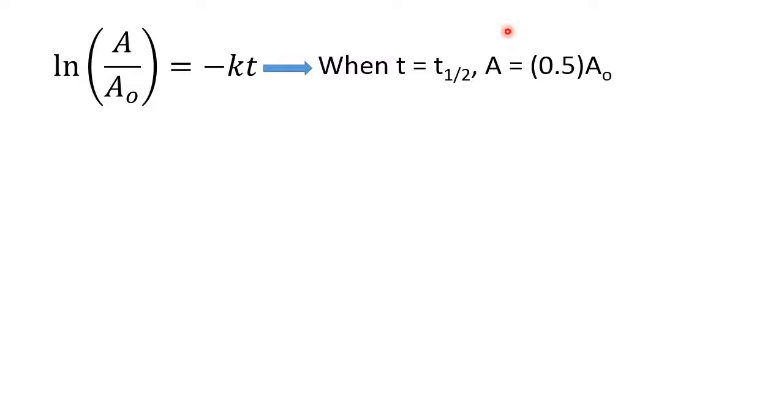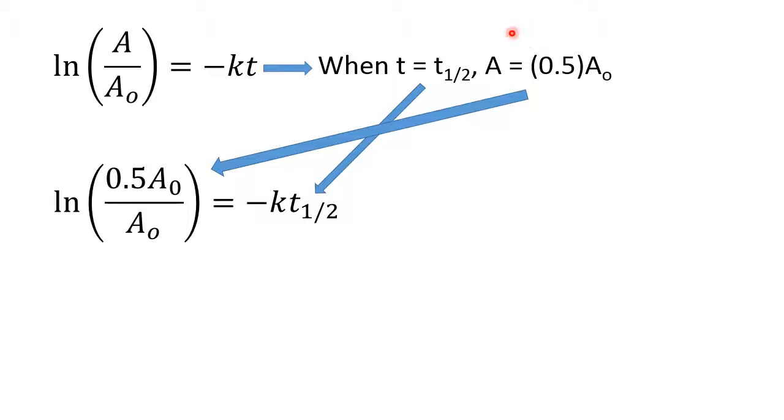If t is equal to the half-life, then A, the concentration at that time, must be exactly one-half of my original concentration. The definition of a half-life is that at that time, I have exactly half of my original concentration. So whenever the time I'm looking at is equal to the half-life, the concentration I have will be half of the original. I'm going to set t equal to the half-life, and that means I have to set A equal to 0.5 of A naught. That's going to give me the natural log of one-half is equal to negative k times the half-life.